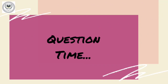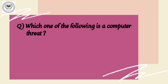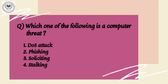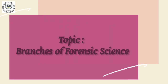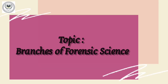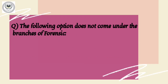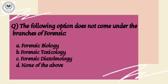Coming to the end of the video, let's check how much you have learned. The question is: which one of the following is a computer threat? The options are: DOS attack, phishing, soliciting, and stalking. If you know the answer, mention it in the comment box. The question asked in the previous video on the topic of branches of forensic science was: which of the following options does not come under the branches of forensic science? The options were forensic biology, forensic toxicology, forensic diatomology, and none of the above. The correct answer is C, that is forensic diatomology.